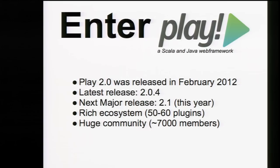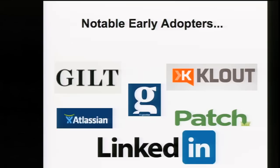Play 2 was released in February 2012. The latest release is 2.0.4, released yesterday — just a maintenance release. The next major release is 2.1, coming this year, which contains more than 100 bug fixes and a bunch of new features. We have about 60 plugins right now, but the ecosystem is growing quickly. We have a really big community, a few big early adopters already, with more to come.